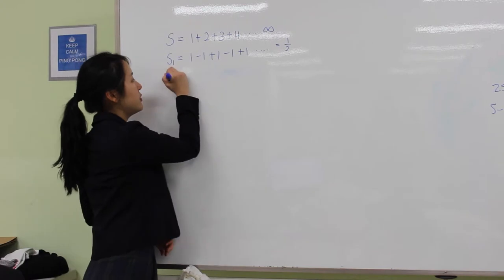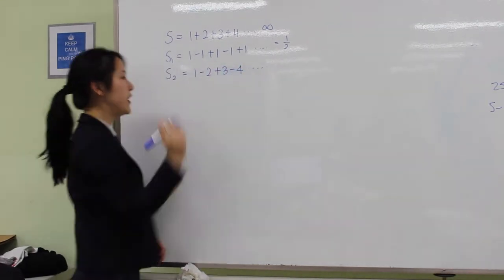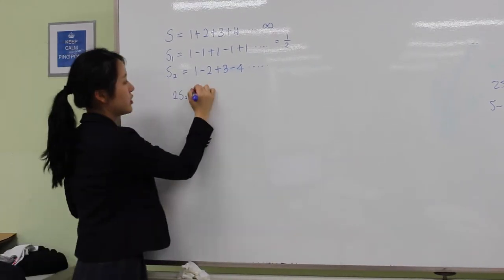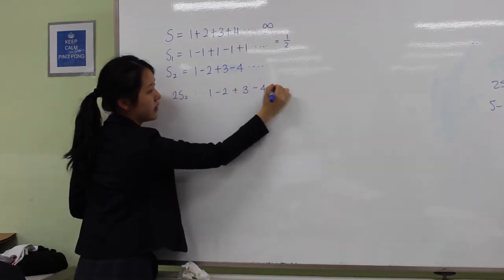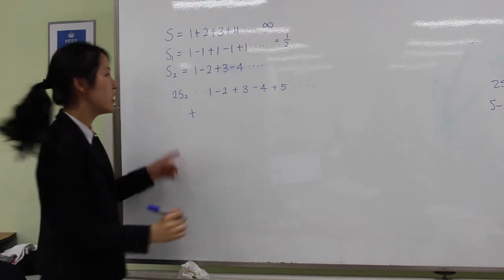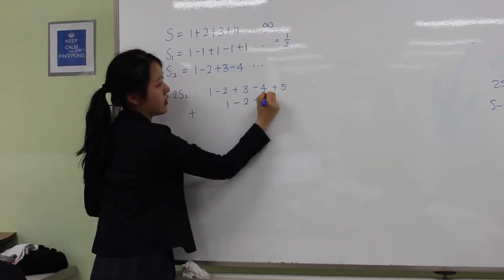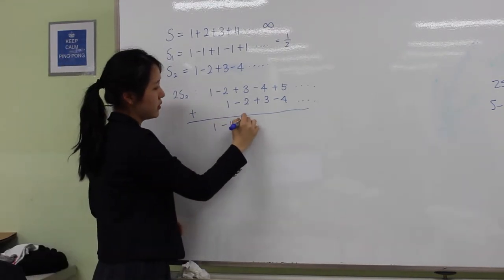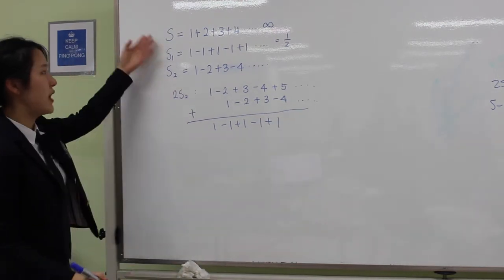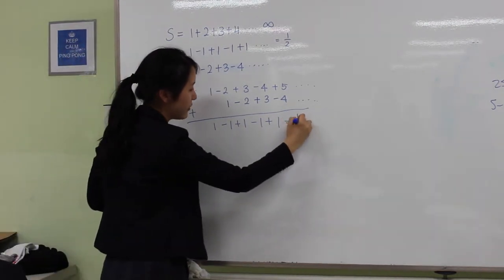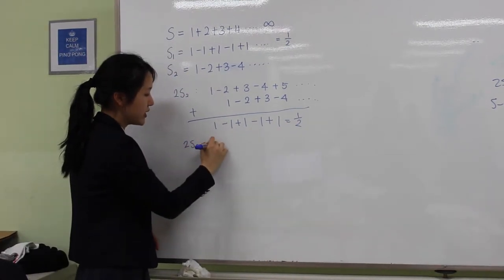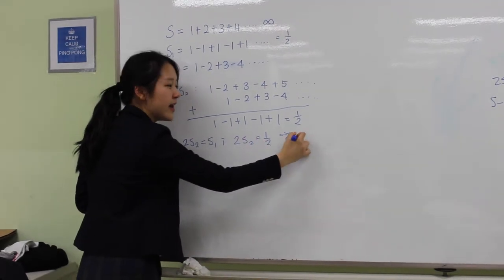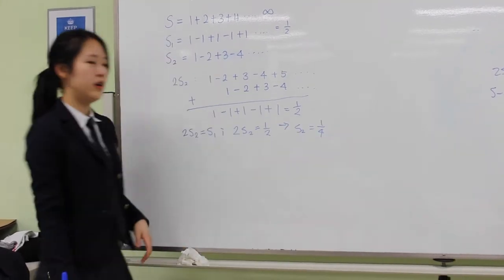And now, we're going to make S2, which is 1 minus 2 plus 3 minus 4 to infinity. Now, what we're going to do is make 2S2, meaning that add S2 twice. We're going to shift it a little bit. Now, if you do the addition, it becomes 1 minus 1 plus 1 minus 1 plus 1, which is the same as S1. This shows that 2S2 equals S1, meaning that 2S2 is equal to 1 half, which derives that S2 is equal to 1 over 4.